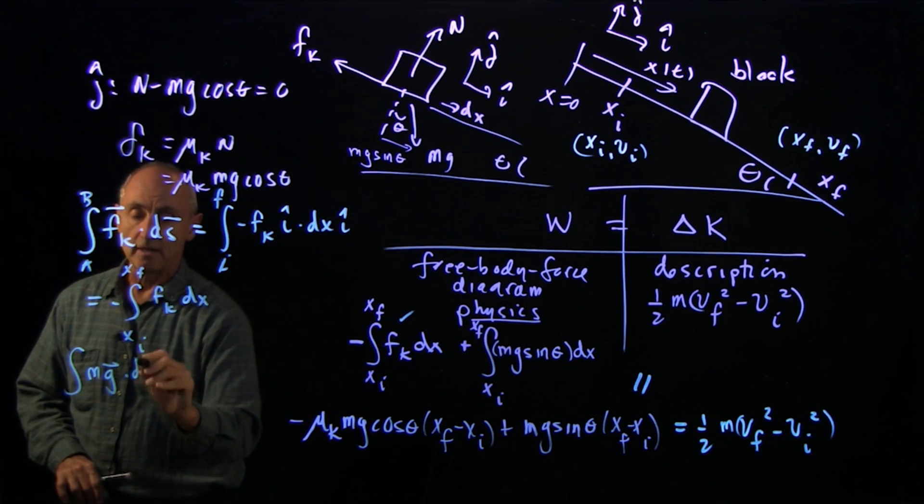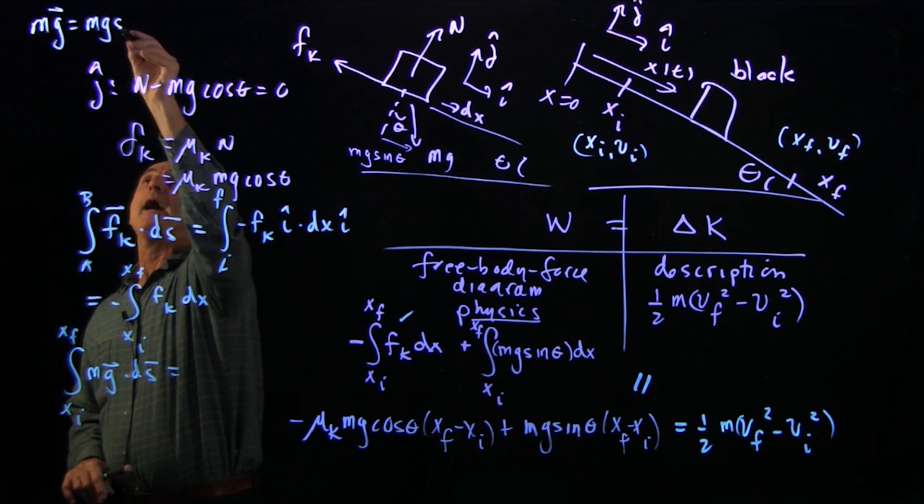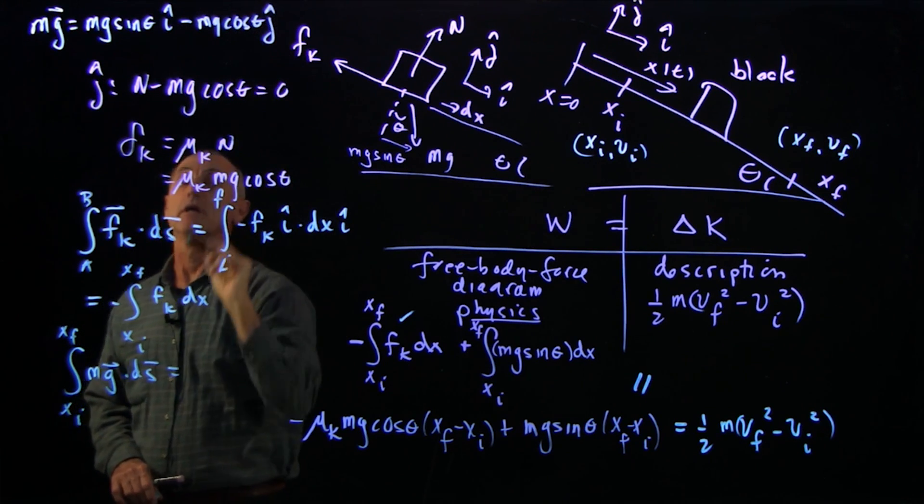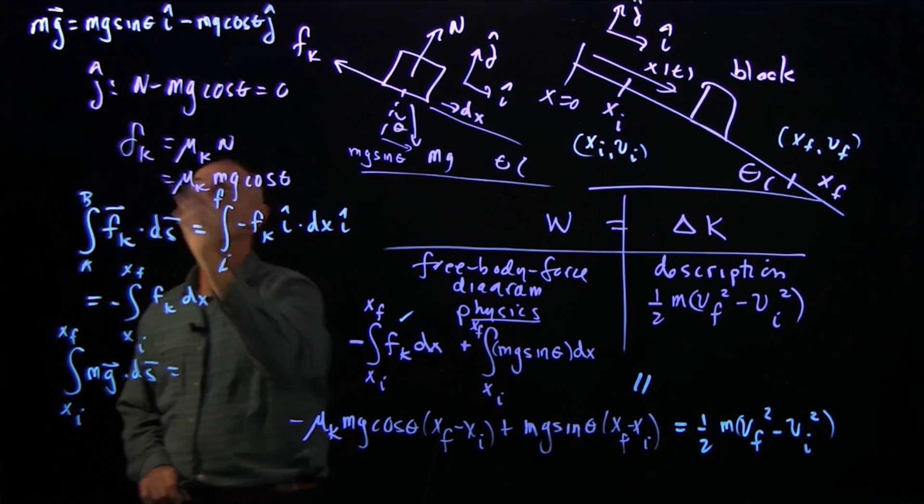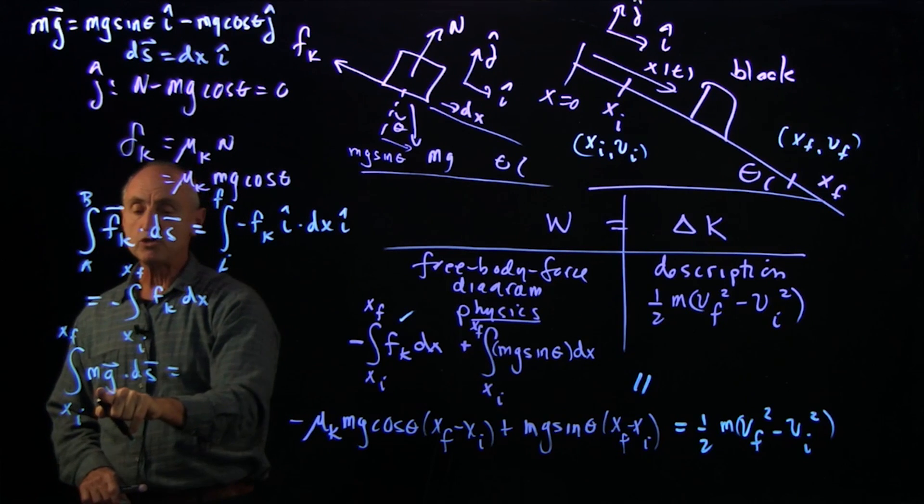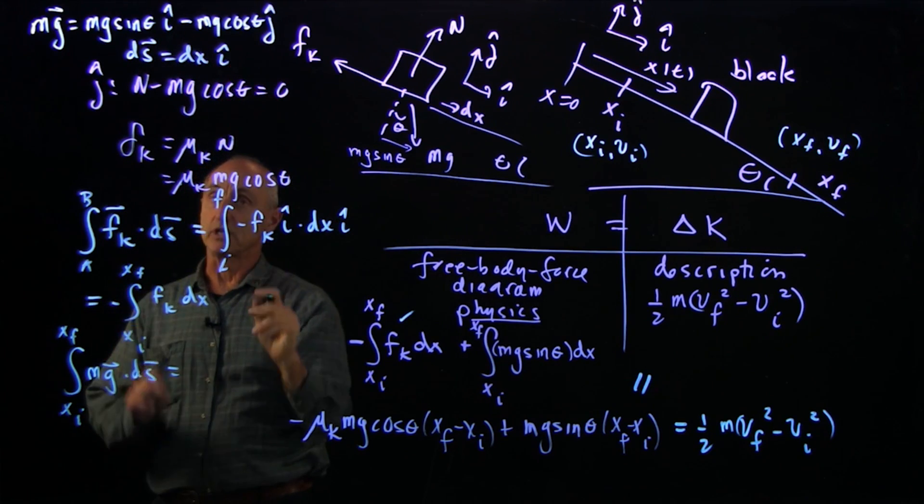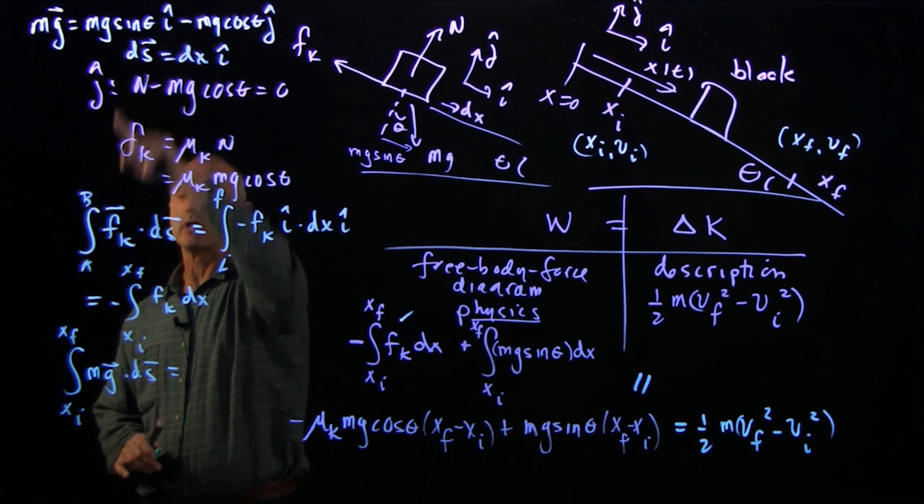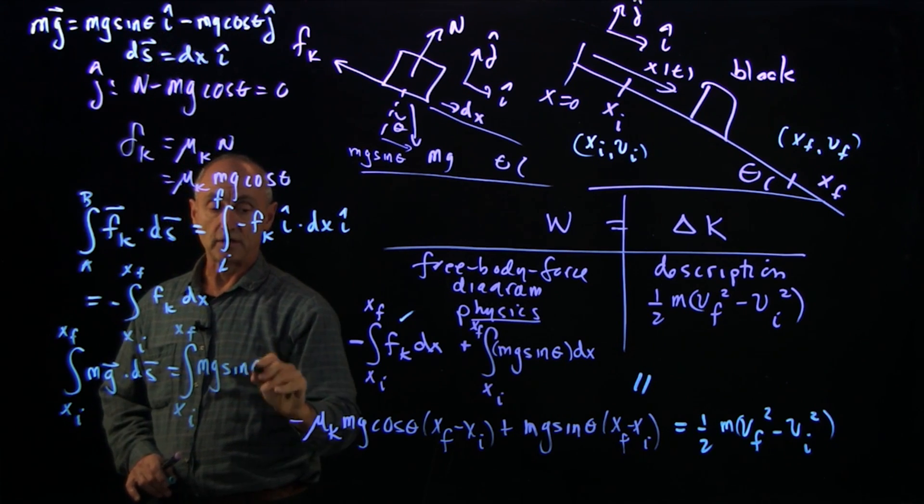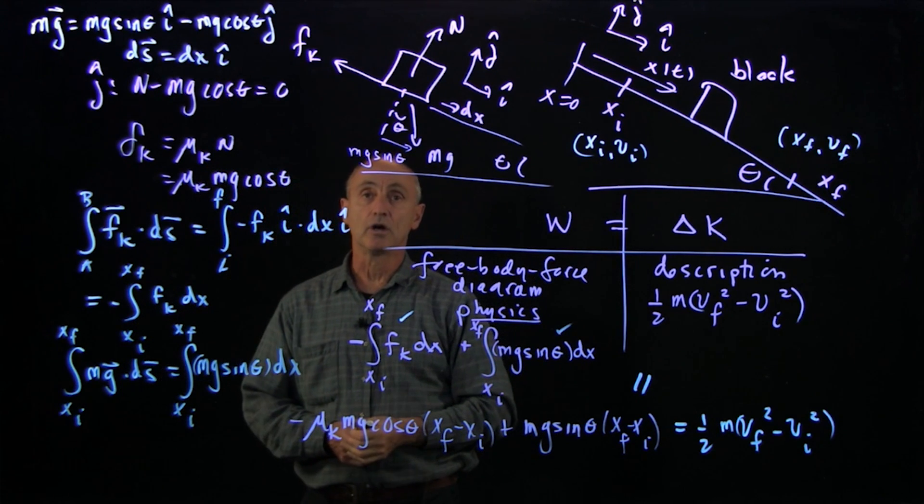The second piece, the gravitational force, dotted into ds from x initial to x final. If you wrote down the gravitational force, mg, as a mg sine theta i hat component and a negative mg cosine theta j hat component, then when we take the dot product, where our ds here, we'll write ds as dx i hat. Then when you dot product mg dot ds, we have i hat dot i hat, which is 1. But j hat dot i hat, they're perpendicular, so that's 0. So the only piece that survives in the scalar product, mg dot ds, is these two pieces. And so we get the integral from x initial to x final of mg sine theta times dx. And that's precisely our second piece here. So here's the simple application of the work energy theorem.